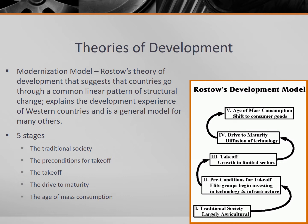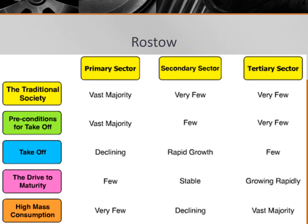Rostow developed his theory in 1960, as colonialism was ending and many countries gained independence. He based his theory on the development experience of the United States and Western Europe, and believed that the newly independent countries in Africa and Asia would experience the same linear steps. As countries move through Rostow's stages, their economy becomes increasingly diverse as it industrializes. The traditional society is the first stage of Rostow's model.